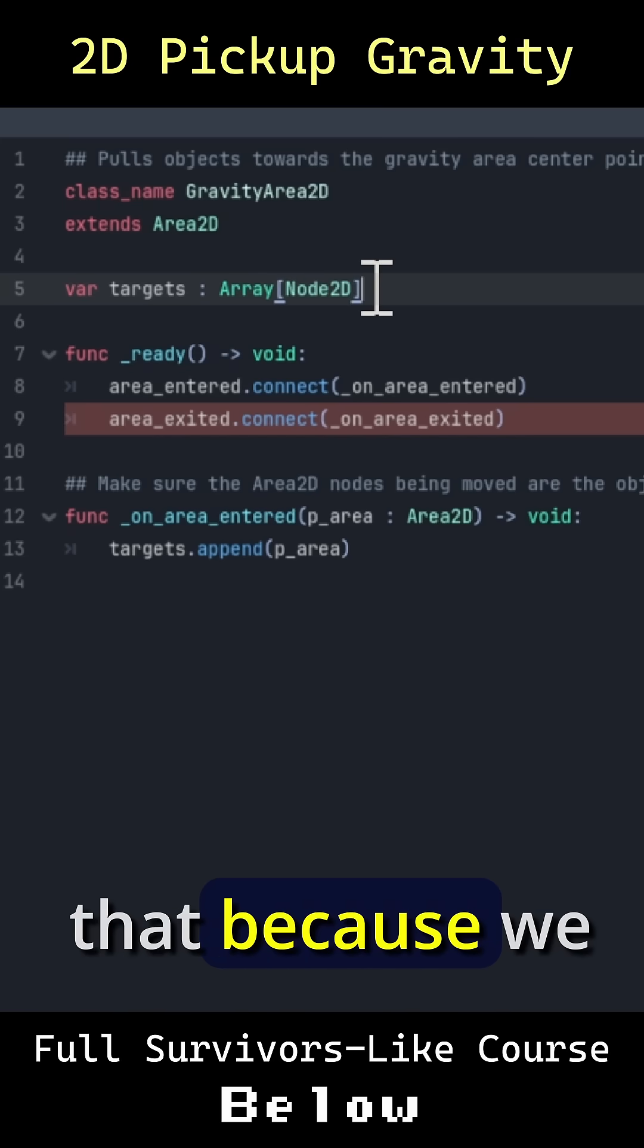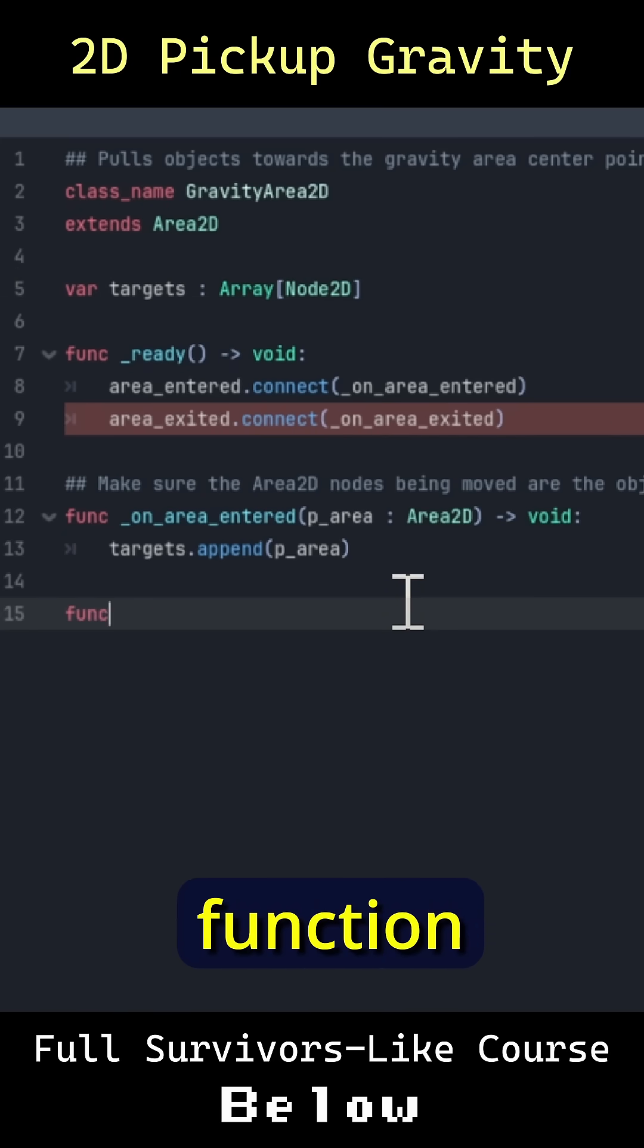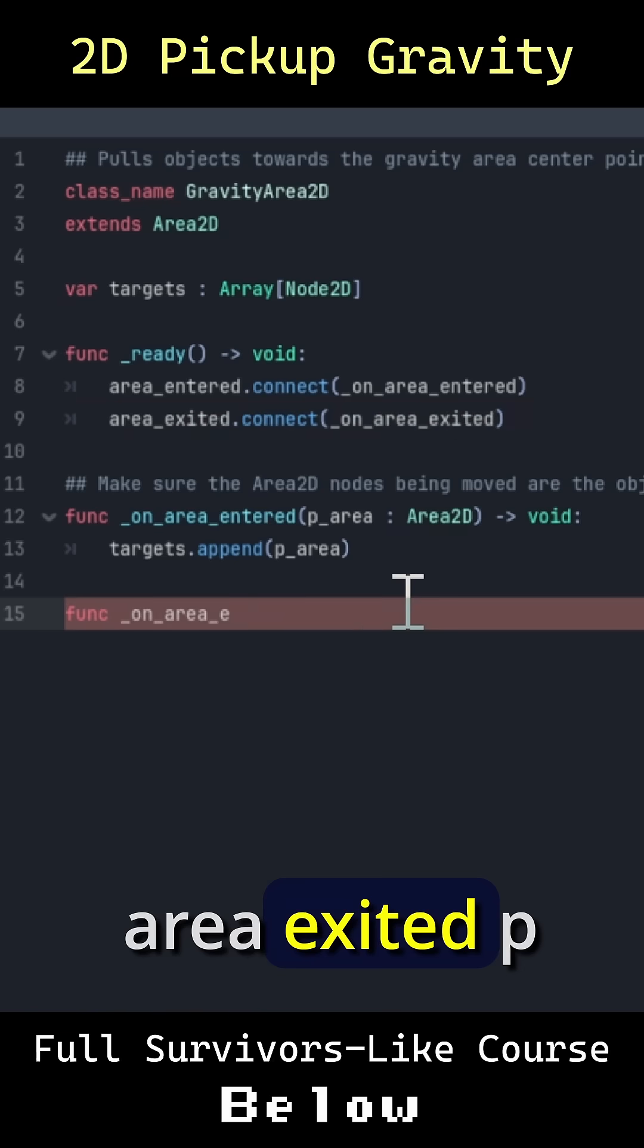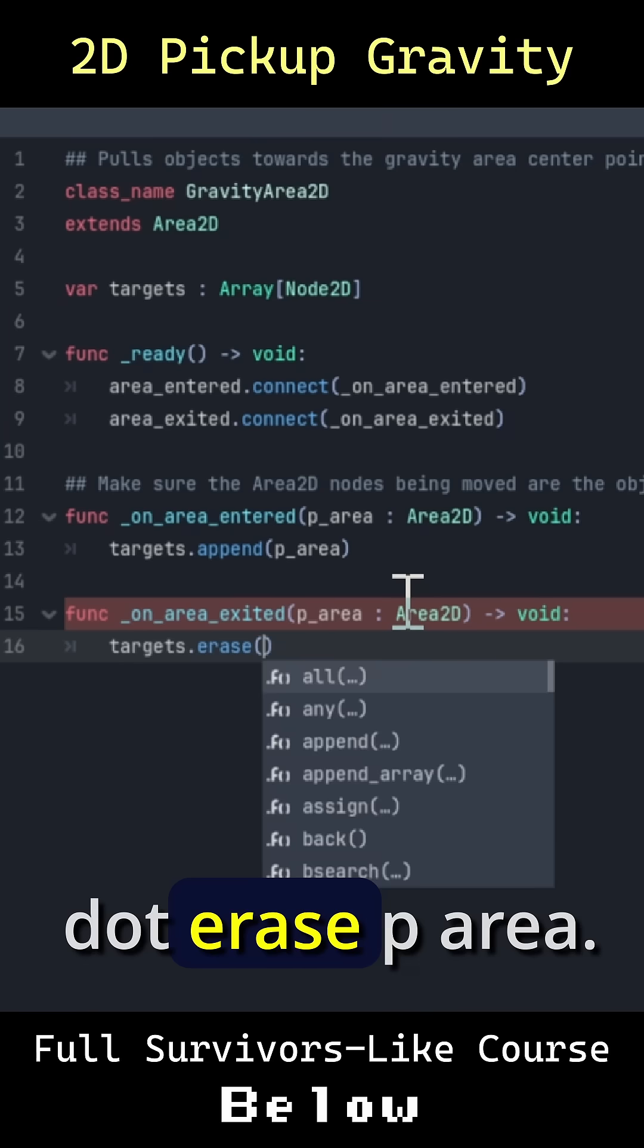So on area exited, function _on_area_exited p_area: Area2D returns void. Then we're going to say targets.erase(p_area).